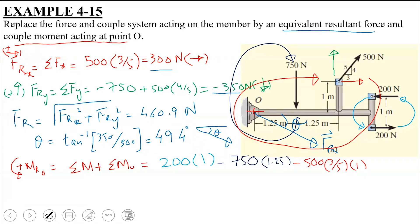And finally, I have this component. 500 into 4 over 5. How much perpendicular distance is this? 2.5. 2.5 is perpendicular distance. And if I talk about this direction, what direction is it? Counterclockwise. Counterclockwise. So I'm going to include it with a positive sign.